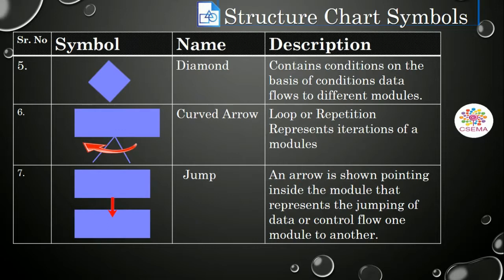And the next symbol is the curved arrow. Here is the module with a curve. And it represents the loop or repetition of a module that iterates on the basis of defined conditions.